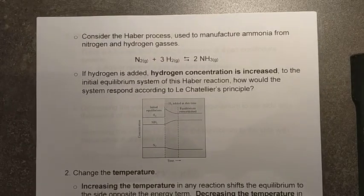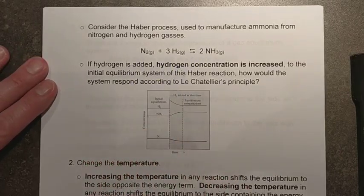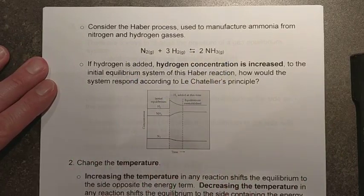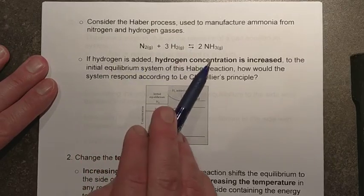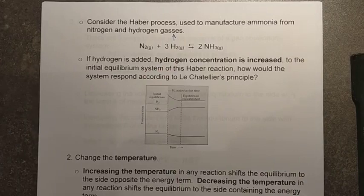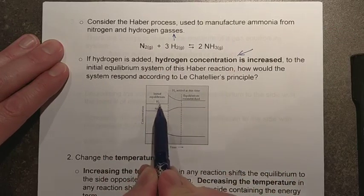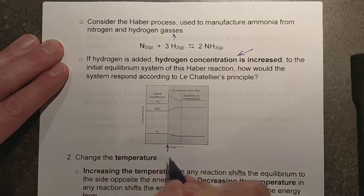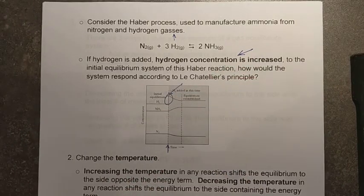We can take a look at an example here — the Haber process. This is the process by which we manufacture ammonia from its elements nitrogen and hydrogen. You can see it is a 1 to 3 to 2 ratio: N₂ + 3H₂ ⇌ 2NH₃. They're all gases. Now, if hydrogen is added, the hydrogen concentration gets increased — I have caused a stress. Looking at the graph, we are at equilibrium, and then at this point we see a sudden increase in concentration of hydrogen. I've just dumped a whole bunch of hydrogen into the same vessel.